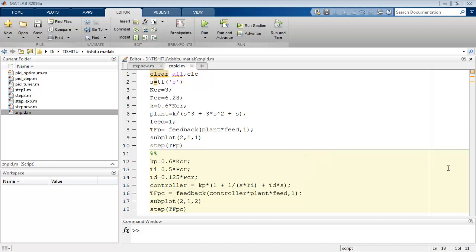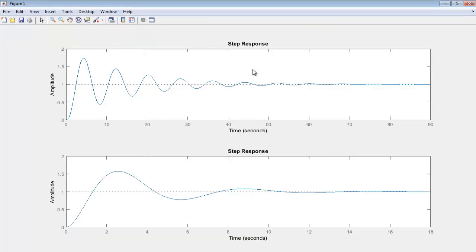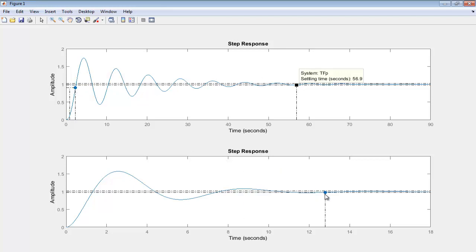By running this file, we can simply observe the response of the system without a controller and with the controller. We can easily spot the value of settling time and rise time in both cases and observe that settling time and rise time is improved in the case of system with the controller.